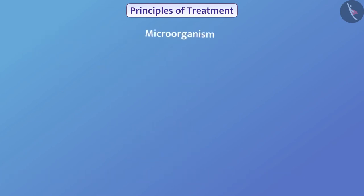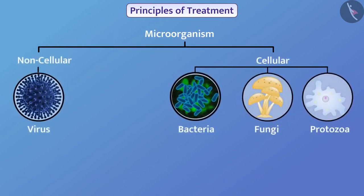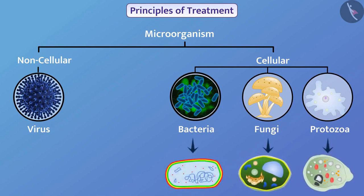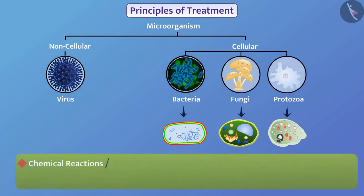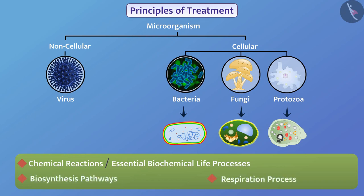Different microorganisms are classified into different groups. The body organization of organisms of different classes is different; therefore, their cellular structure is also different. Due to this, the chemical reactions — i.e., essential biochemical life processes — the biosynthesis pathways, and the respiration process are different in each class. Therefore, chemical reactions occurring in one class of organism do not occur in other classes, and treatment of disease is done on the basis of the class of the causative pathogen.